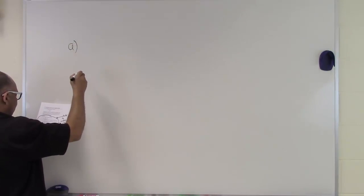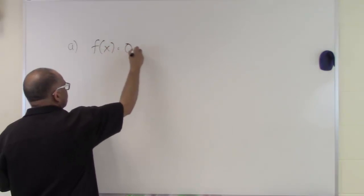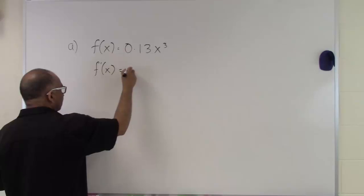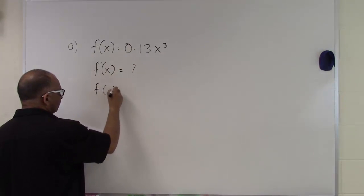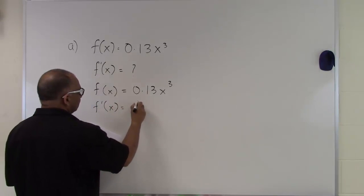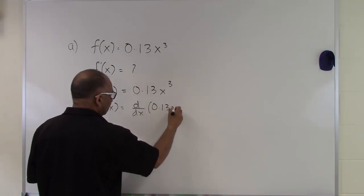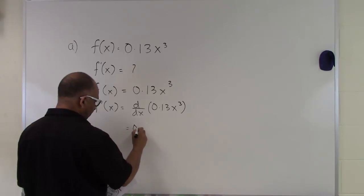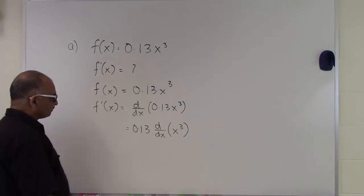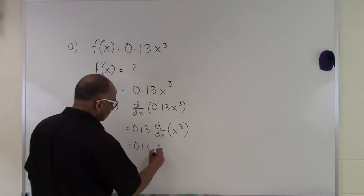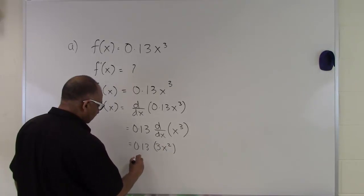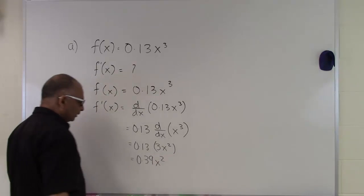In part A, we are given the function f(x) = 0.13x³ and we are trying to find the derivative. Recalling differential calculus, f prime of x is the derivative of 0.13x³. We take 0.13 outside as a constant, then find the derivative of x³, which is 3x². Applying the power rule gives us f prime of x = 0.39x².